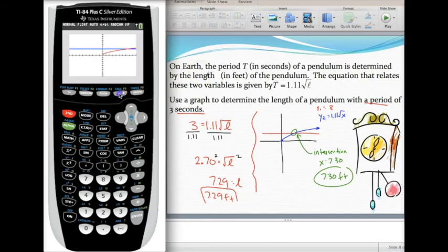let's hit 2nd, trace to get to the calculate menu. I want to select option 5, intersect. All you need to do is trace over using left and right arrows to get close to that intersection point, and then just hit enter three times to answer the three questions they're asking for. First curve, we're on it, hit enter. Second curve, it's on it. And then guess, just go ahead and hit enter.